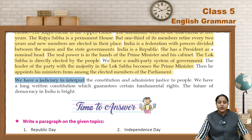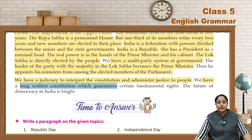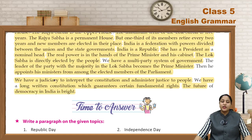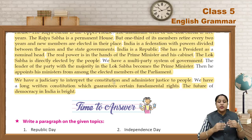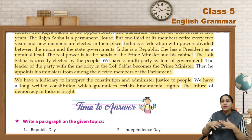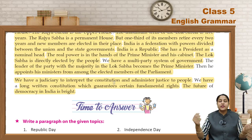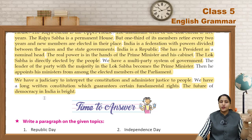We have a judiciary to interpret the constitution and administer justice to people. We have a long written constitution with guaranteed certain fundamental rights. The future of democracy in India is bright. Yahaan par ek judiciary hai jo humaari constitution ko interpret karti hai aur justice deti hai logon ko. Humaari India mein bohut saare fundamental rights hain logon ke liye aur India ka democratic future bohut zhaada bright hai.